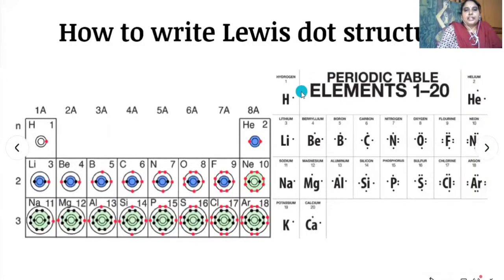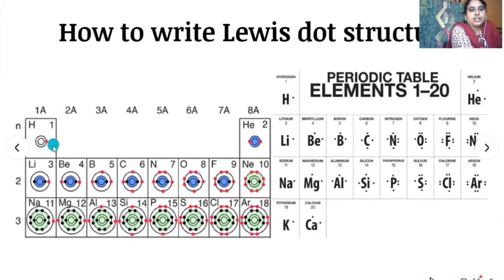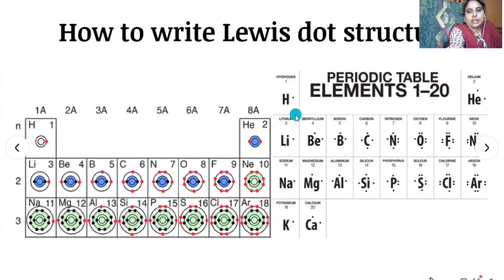How to write Lewis dot structures: the electrons present in the outermost shell are called valence electrons. For example, take hydrogen — atomic number is one, electronic configuration is 1s1. The electron present in the outermost shell is only one, so we put one dot on the hydrogen atom.